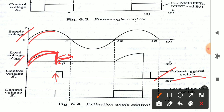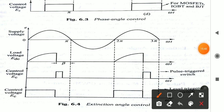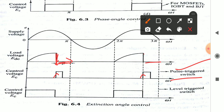In extension angle control using a pulse triggered switch: when the rising edge of the pulse is applied, the output voltage becomes zero — the switch stops conducting. This is opposite to the phase controlled converter, where a gate pulse causes conduction to start. Here, a gate pulse causes the output voltage to go to zero. During the negative half cycle it won't conduct; in the next positive half cycle the same pattern repeats.